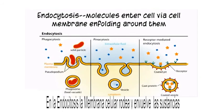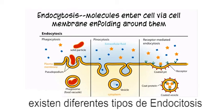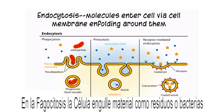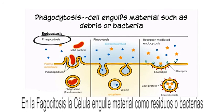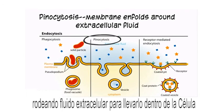In endocytosis, the cell membrane enfolds around substances to bring them into the cell. There are different kinds of endocytosis. In phagocytosis, the cell engulfs materials such as debris or bacteria. In pinocytosis, the membrane enfolds around extracellular fluid to bring it into the cell.